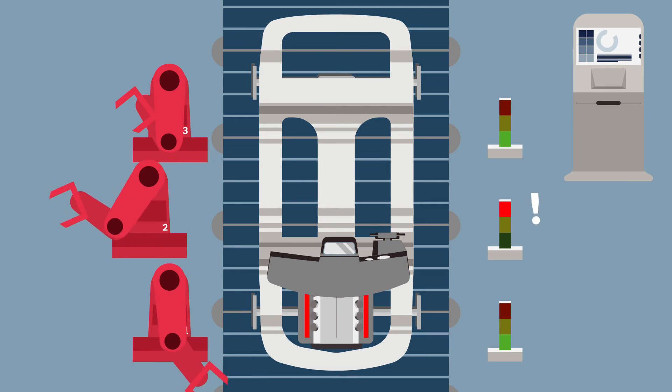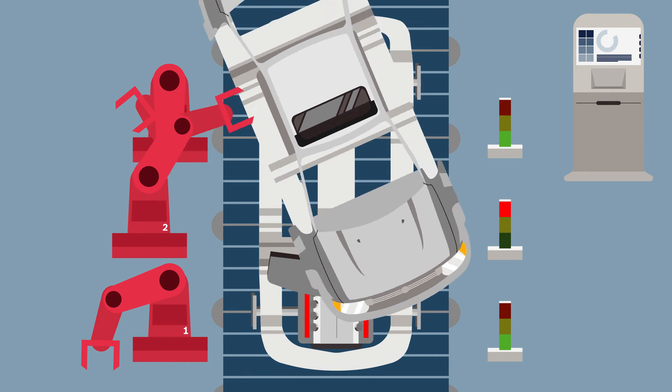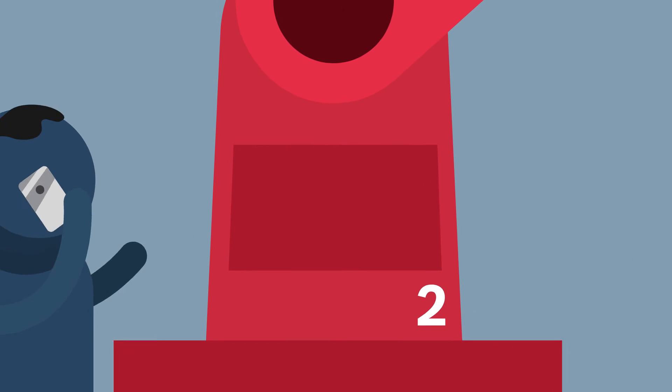Now suppose one of these machines is starting to malfunction. Since it's part of the manufacturer's Industry 4.0 platform, data generated by the machine predicts a breakdown before it actually happens. The operator receives a message and can contact Bosch Rexroth service.